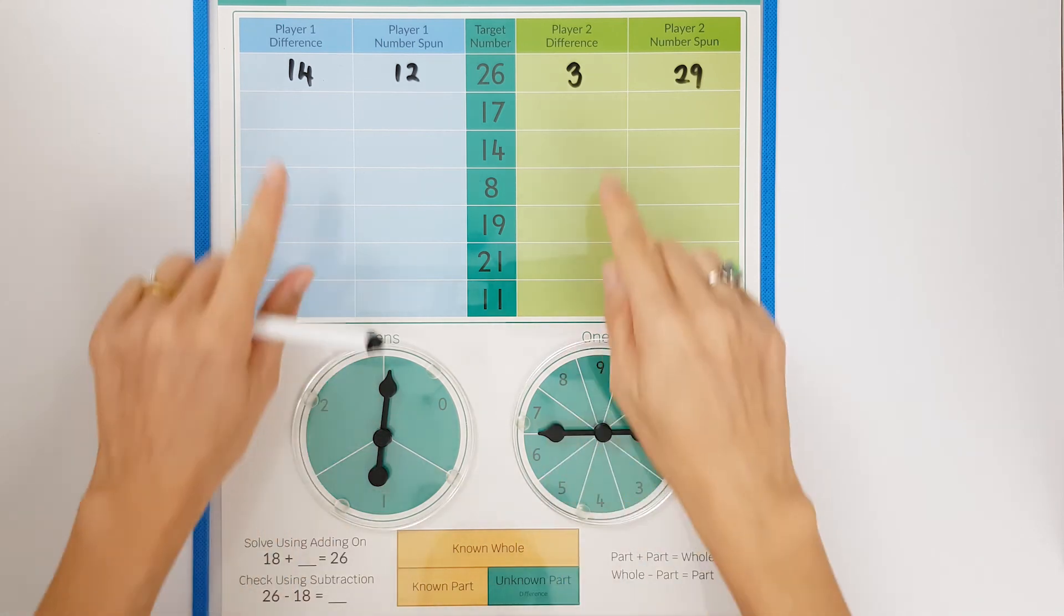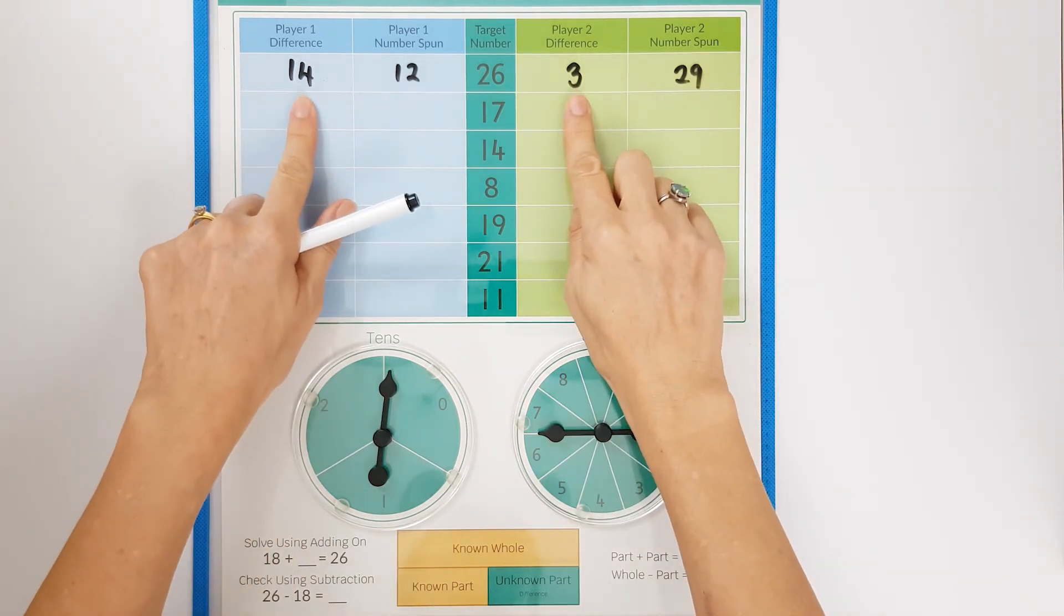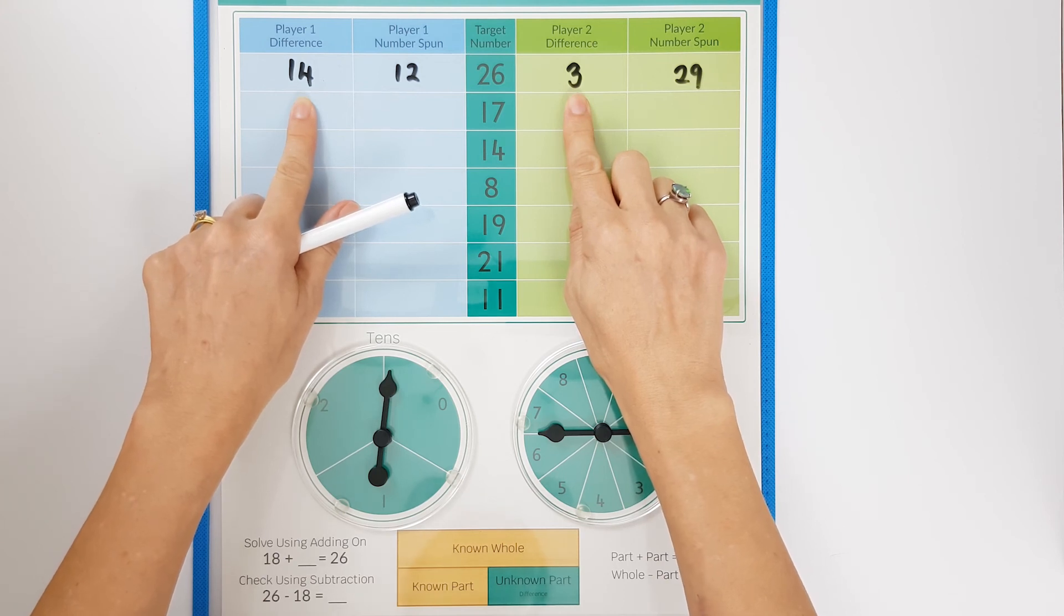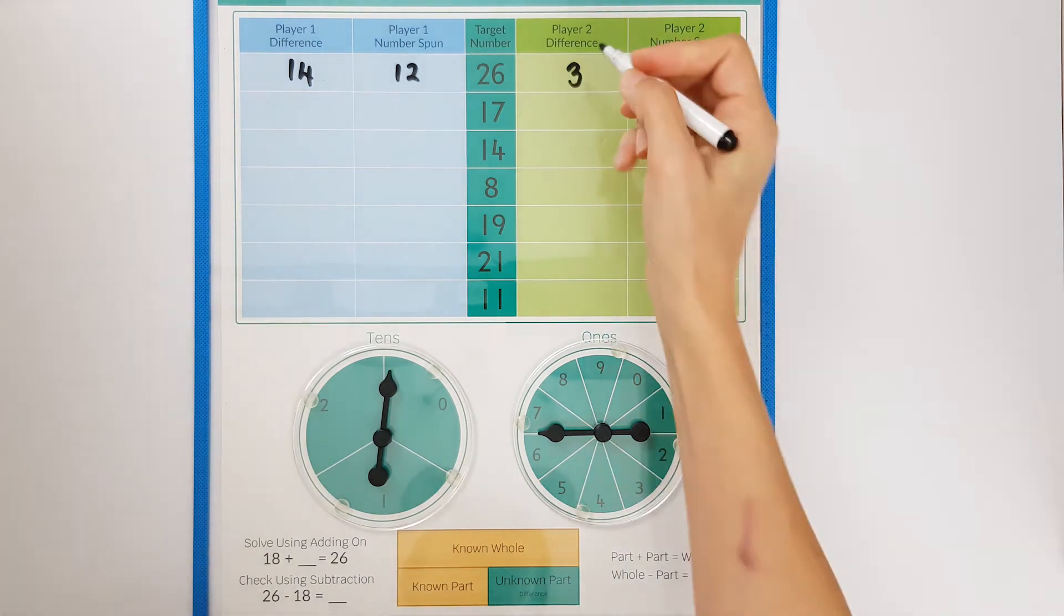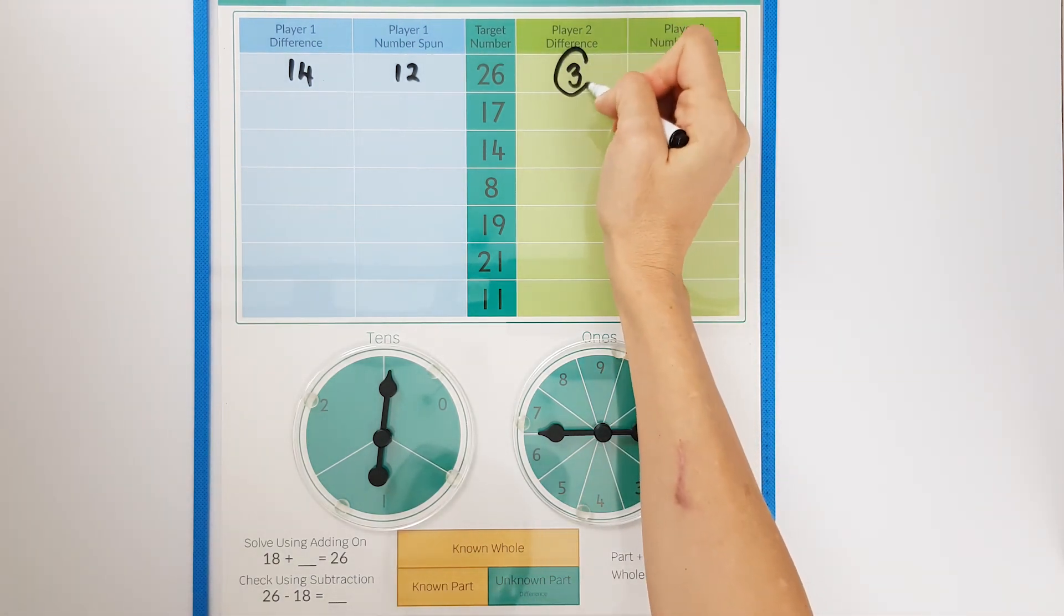The winner is the player who makes the least difference or the number that's closest to the target number. For this round player two was the winner so they circle their score.